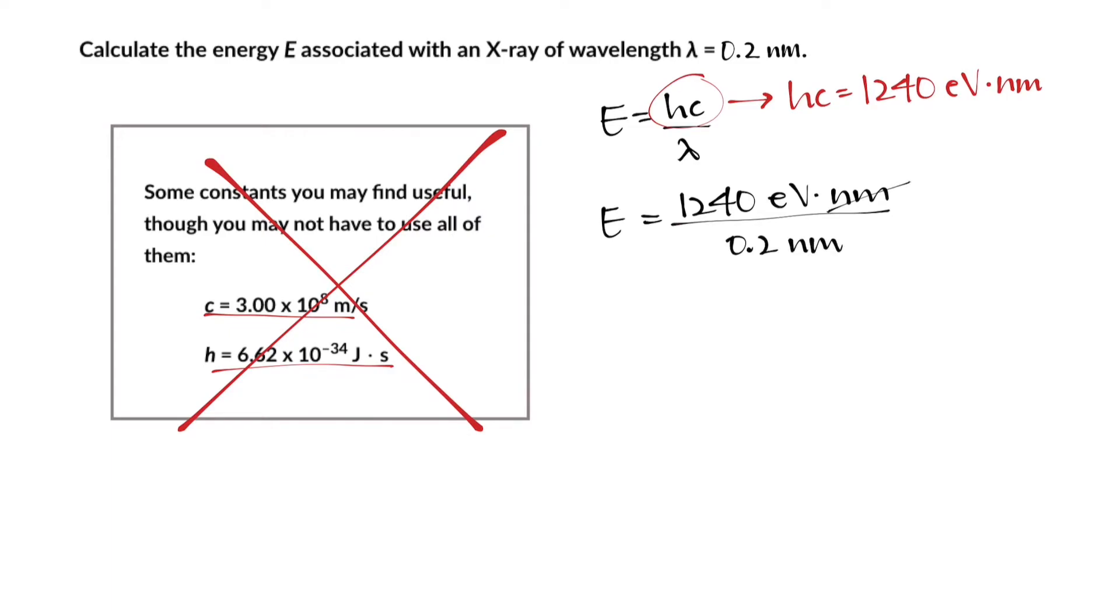Now you have nanometers on the top and bottom of the fraction, so those will cancel each other out, leaving behind only the unit of electron volts, which is exactly what you want for energy.